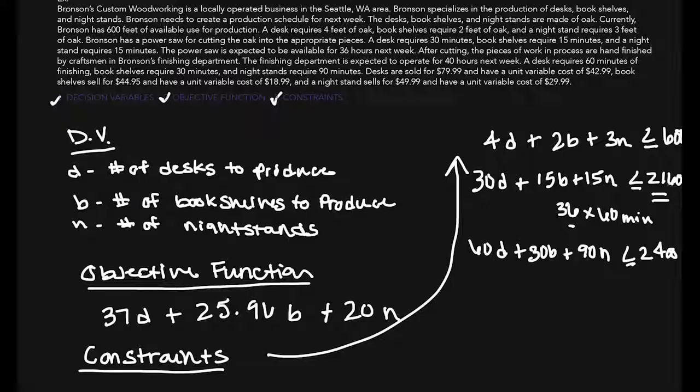2,160 minutes of power saw minutes available, and the last one, 600 feet of board. So, those are all of the primary resources, but we also have to think of what's called a non-negative constraint. Which, in this setting, is there ever going to be a time where Bronson's custom woodworking is going to make negative bookshelves, or negative number of desks, or a negative number of nightstands? No, that's not possible. So, we need to make one final constraint that symbolizes the number of desks, the number of bookshelves, and the number of nightstands is all greater than or equal to 0 units.